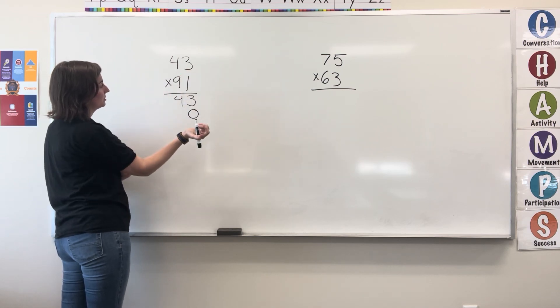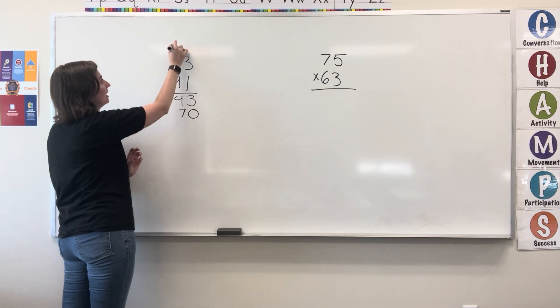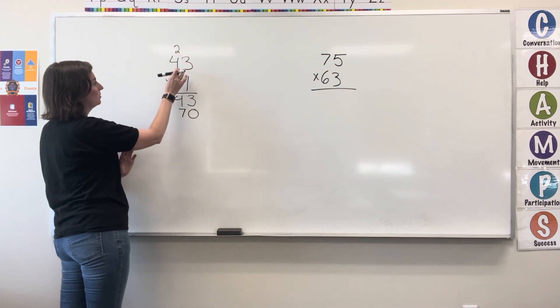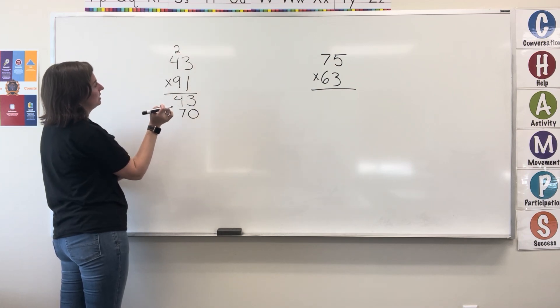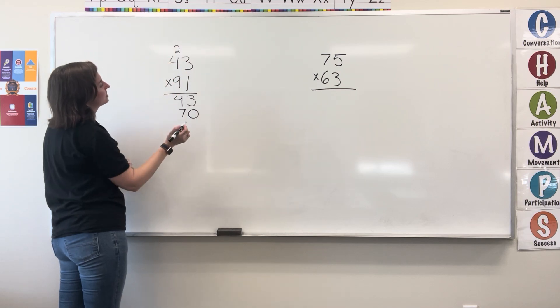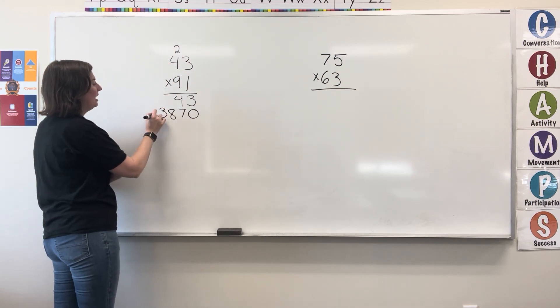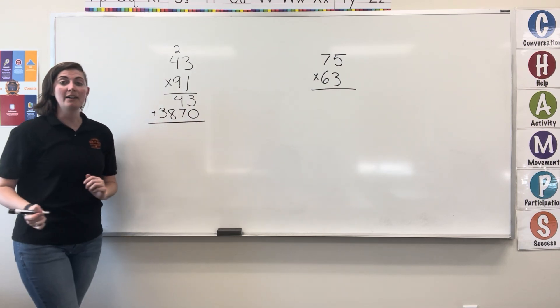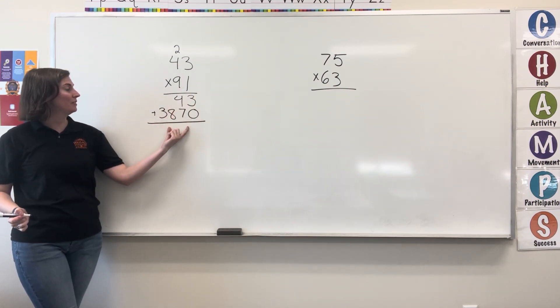9 times 3 equals 27, write the 7, carry the 2. 9 times 4 equals 36, plus 2 equals 38, write the 38. Now, just like in an area model, I'm going to add up both of these numbers.